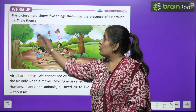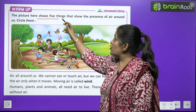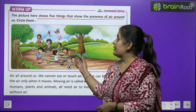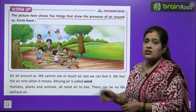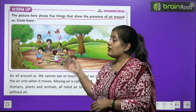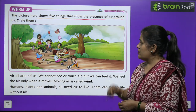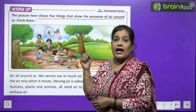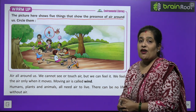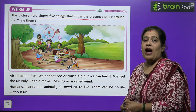Before we start the chapter, first we will do a warm-up exercise. The picture here shows five things that show the presence of air around us. Circle them. You have to circle five things in the picture that show that air is all around us.